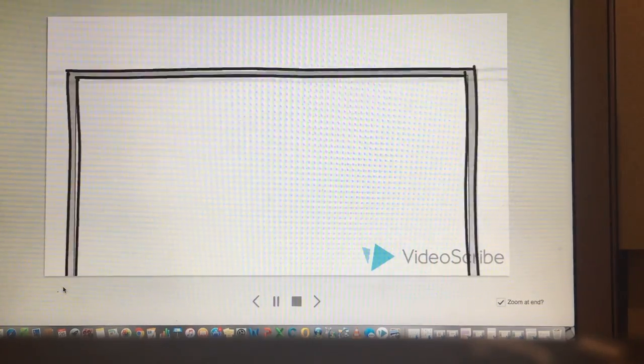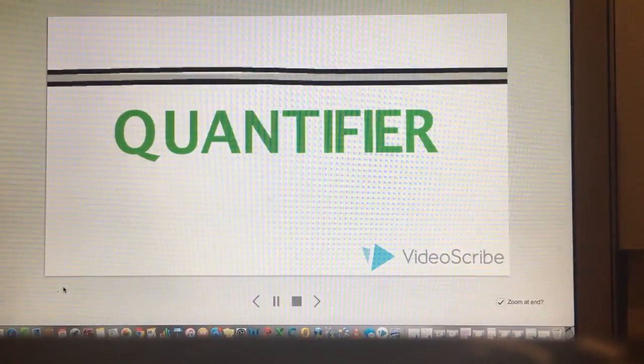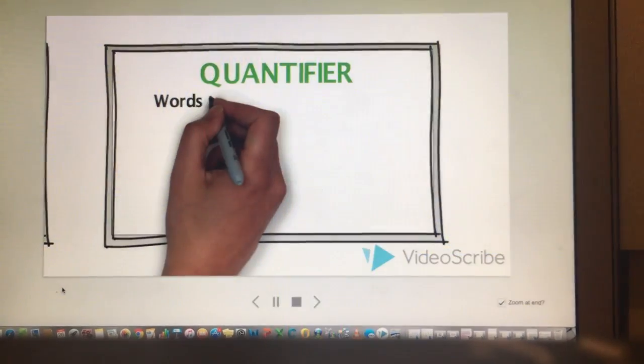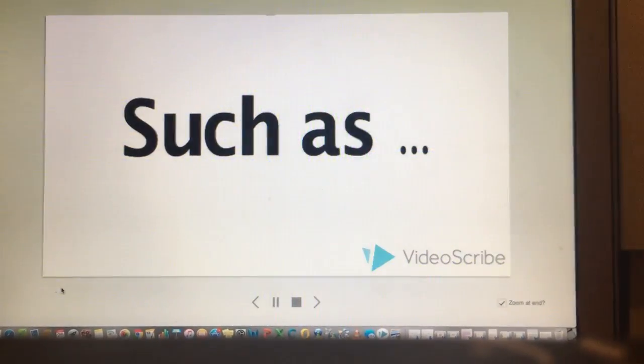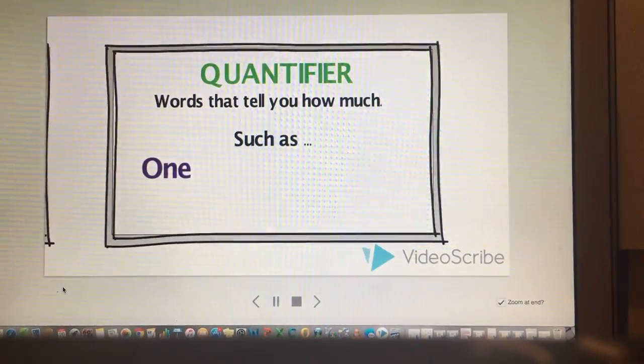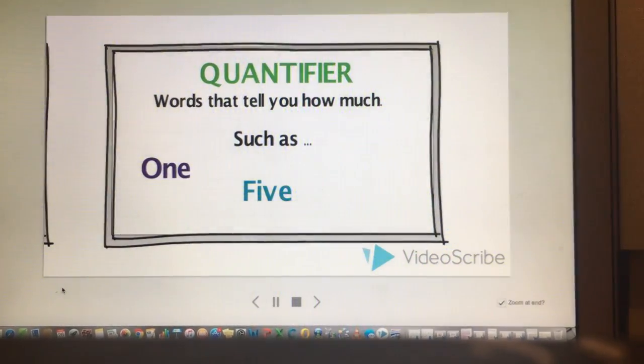Quantifiers are words that tell you how much. For example, words such as one, five, and some.